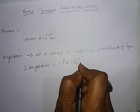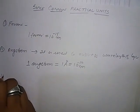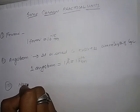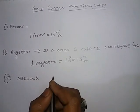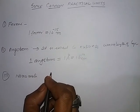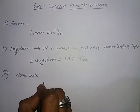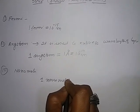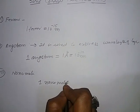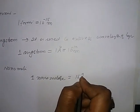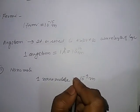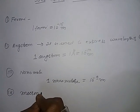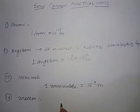of light. One nanometer equals 10 to the power minus 9 meters. Micron is a unit of distance